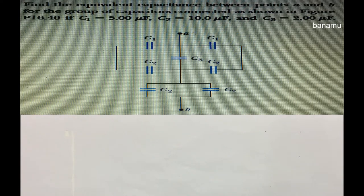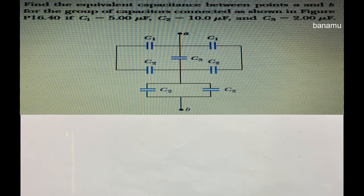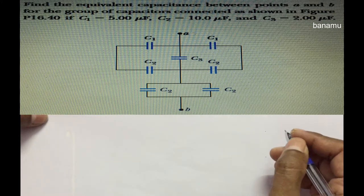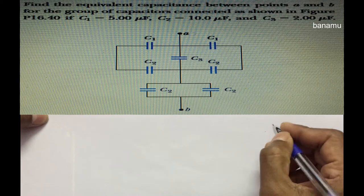Find the equivalent capacitance between the points A and B for the group of capacitors connected as shown in the figure. C1 is equal to 5 microfarad, C2 is equal to 10 microfarad, and C3 is equal to 2 microfarad. Let us draw the figure.